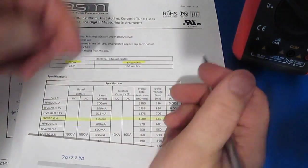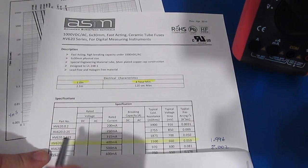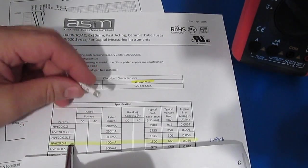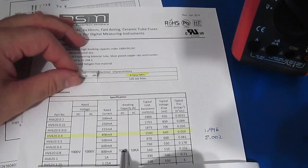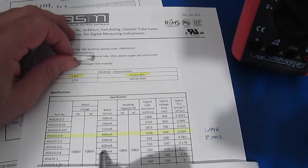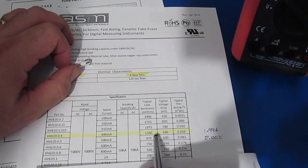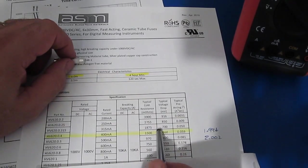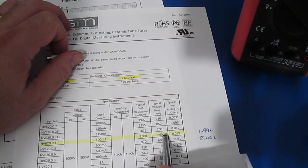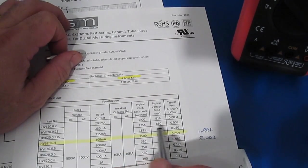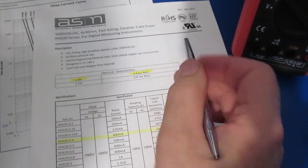The next thing I want to do is measure the brake time for this fuse. So this is the ASTM datasheet and this is the particular fuse we're interested in, it's an HV620.0.4 and again that's rated for 400 milliamps. You can see the braking capacity for both AC and DC is 10 kiloamps and it's rated for an AC DC voltage of 1000 volts. Typical cold resistance is 1500 ohms, typical voltage drop is 660 millivolts, that's at the 400 milliamps.